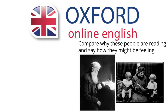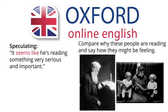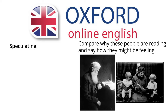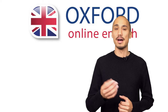In addition to comparing and contrasting, you need to know how to speculate. You shouldn't just say what you see — you also need to talk about the ideas and possibilities that the picture represents. Some useful structures include: 'might', 'perhaps', 'maybe', and 'it seems like'. For example: 'It seems like he's reading something very serious and important', or 'Perhaps she is reading the children a fairy story.' You can also use if-sentences to speculate on what you would do or how you would feel: 'If I were her, I'd be very happy' or 'If that were me, I'd fall asleep.' It's essential that you study this kind of language and use it when you practise.